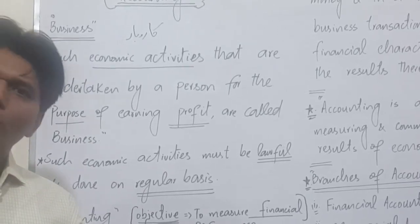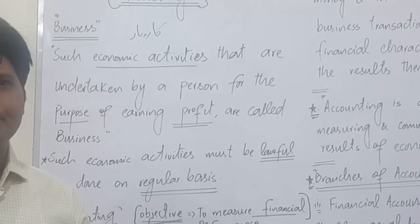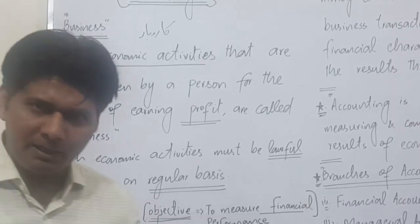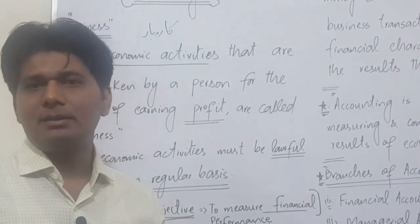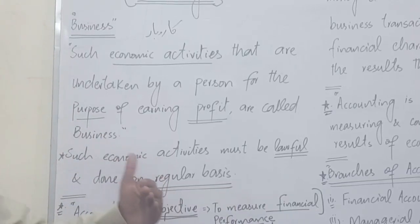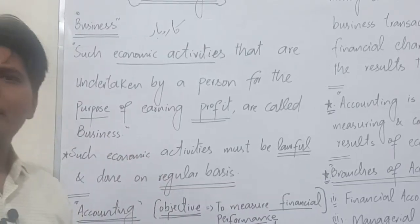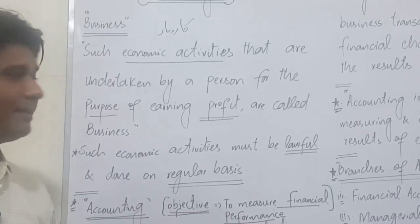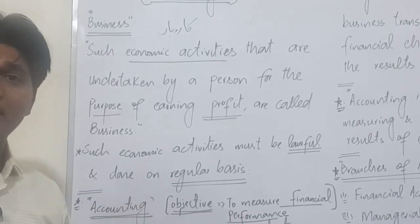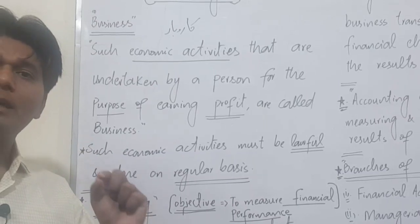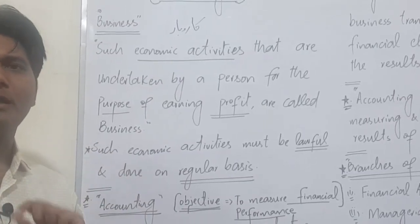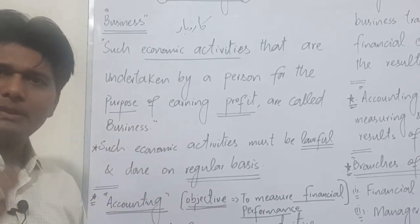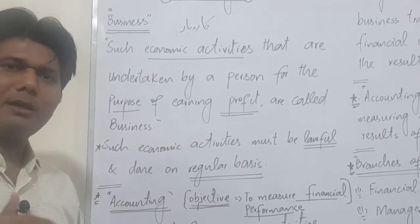One category is economic activities and the other is non-economic activities. The economic activities are discussed here. Economic activities undertaken by a person for the purpose of earning profit are called business. Such economic activities must be lawful and done on a regular basis.